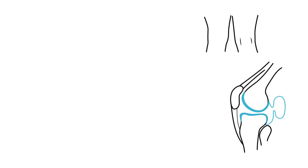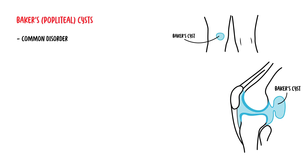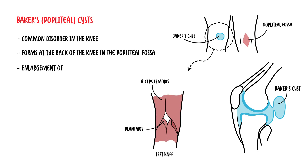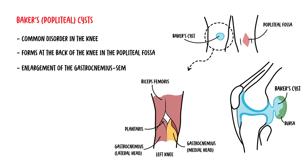In this video we're going to talk about Baker's cyst. Baker's cysts, also known as popliteal cysts, are one of the most common disorders in the knee. These fluid-filled cysts form at the back of the knee, in the area called the popliteal fossa. It is actually an enlargement of a bursa that sits between the gastrocnemius muscle, called the gastrocnemius semimembranosus bursa.